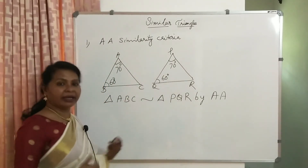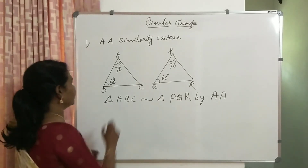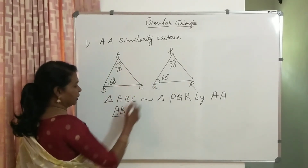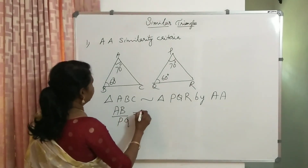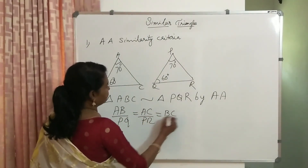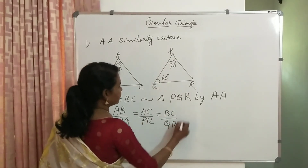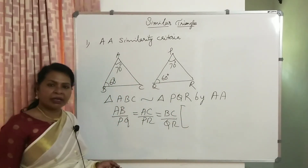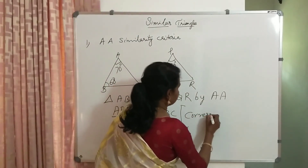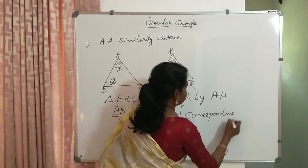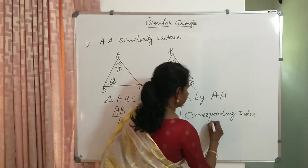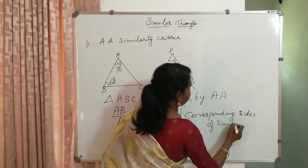If triangles are similar, then the corresponding sides are proportional. That is, AB/PQ equals AC/PR equals BC/QR. The reason is: corresponding sides of similar triangles are proportional.